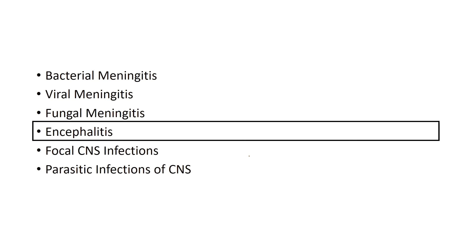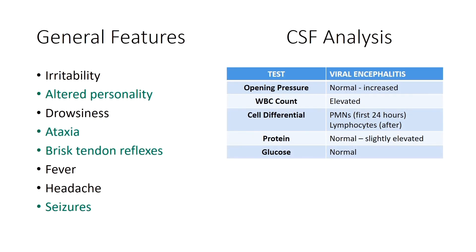Now onto encephalitis. There is a difference between meningitis and encephalitis — encephalitis involves infection of brain tissue itself, not just the meninges. Because of this, we'll see neurological manifestations in addition to the general meningeal signs.